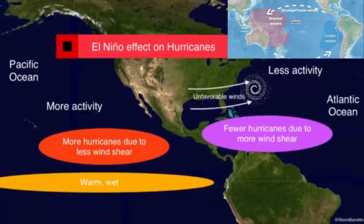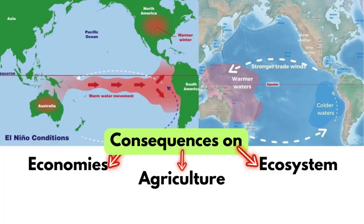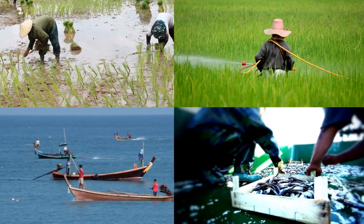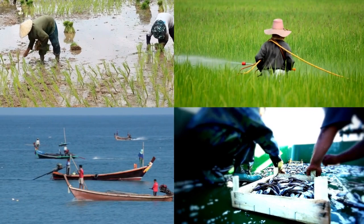So why do El Niño and La Niña matter? These phenomena have far-reaching consequences that affect not only weather patterns but also agriculture, economies, and ecosystems around the world. For example, knowing when an El Niño or La Niña event is likely to occur can help governments, farmers, and businesses prepare for the associated risks and opportunities.